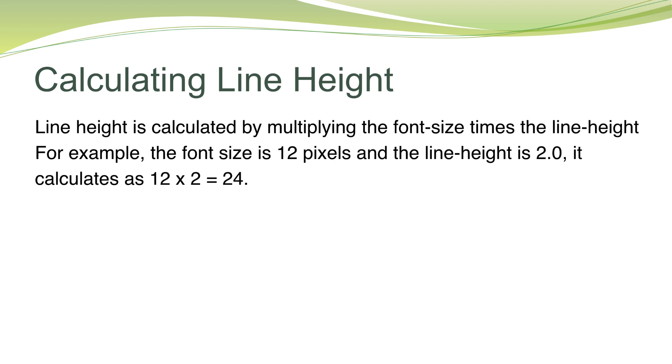Line height is calculated by multiplying the font size times the line height. For example, the font size is 12 pixels and the line height is 2.0. That calculates as 12 times 2 equals 24.